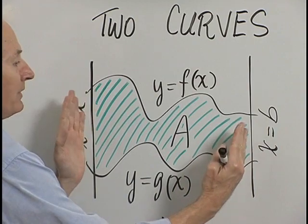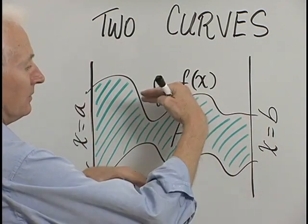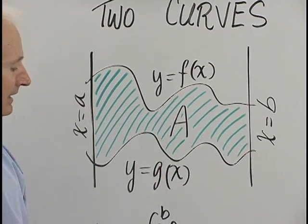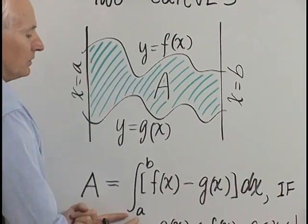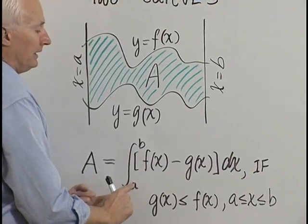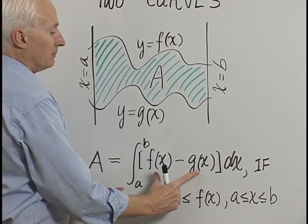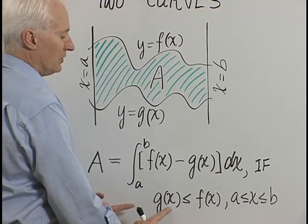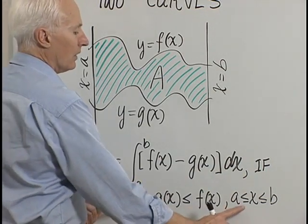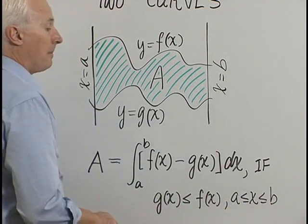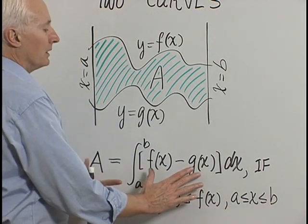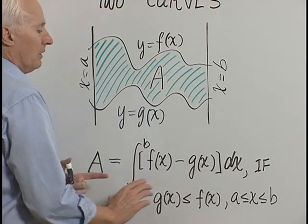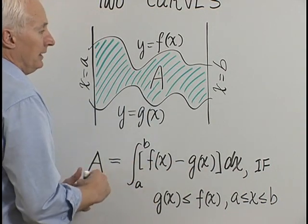The area trapped between these two vertical lines and between these two graphs is capital A given by: capital A is the definite integral from a to b of the quantity f of x minus g of x dx, provided that g of x is less than or equal to f of x for all x between a and b. In other words, the graph of f is always above the graph of g during the interval from a to b.